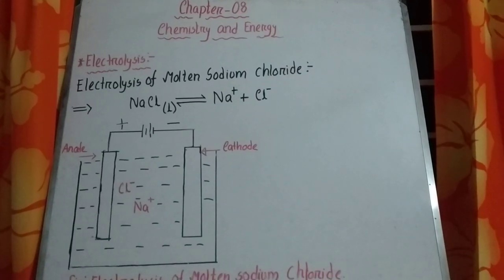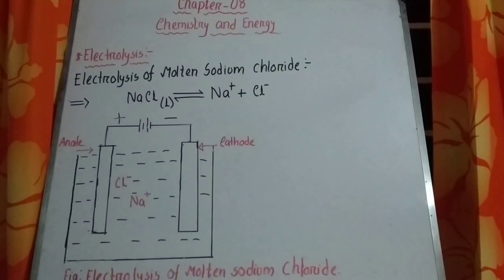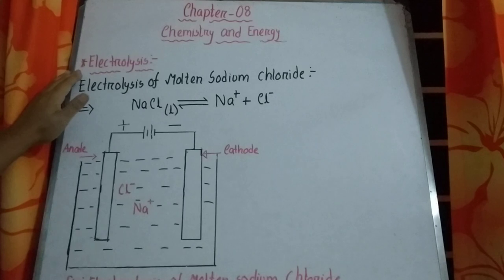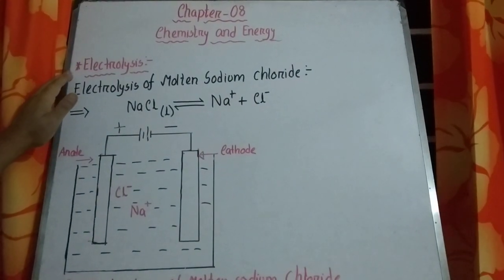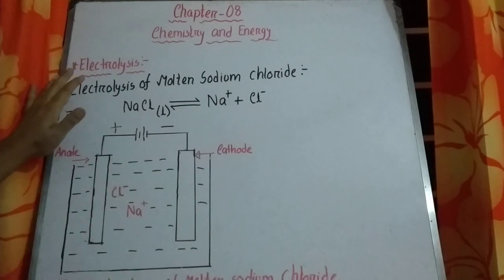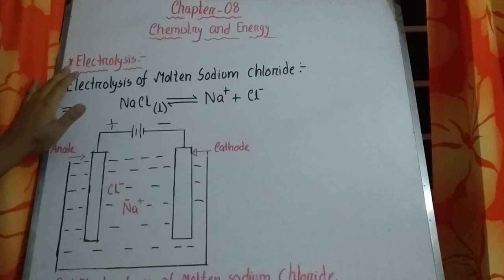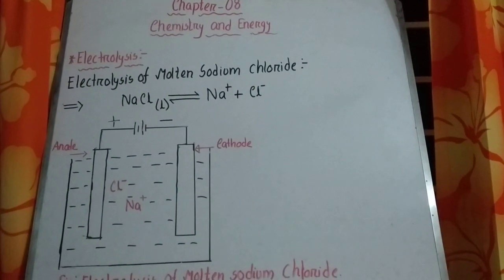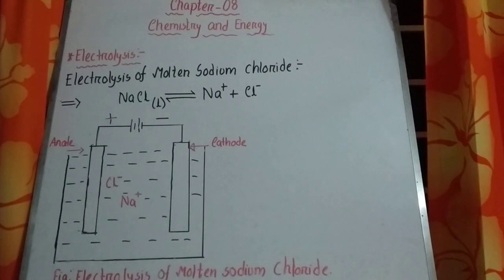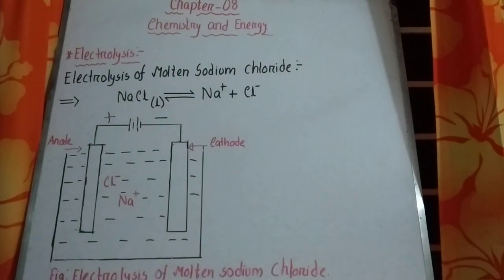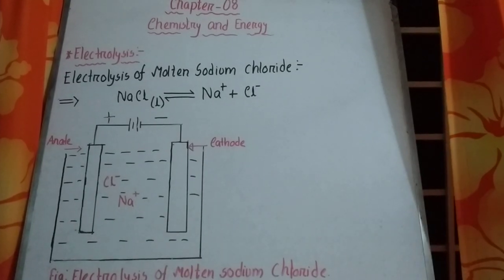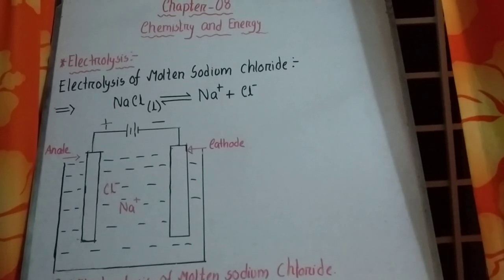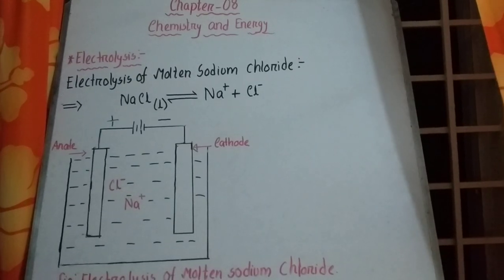Electrolysis is the process in which electricity is passed through a molten or liquid state of a compound, to divide the compound into oppositely charged ions. It is known as electrolysis.